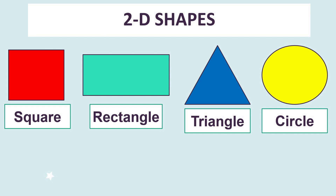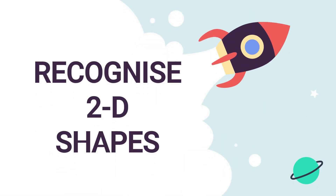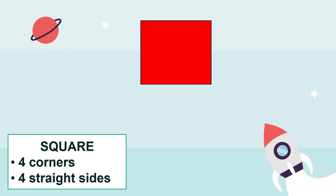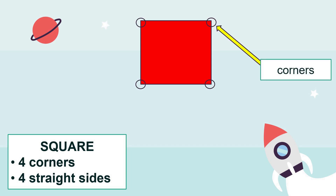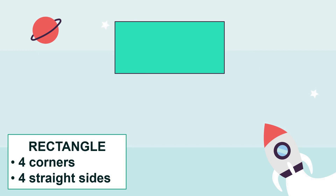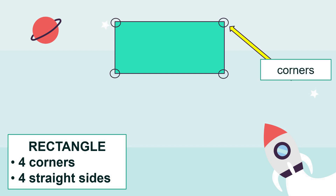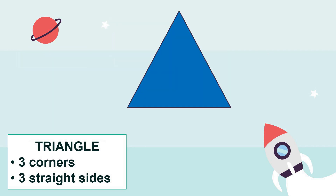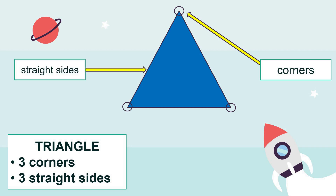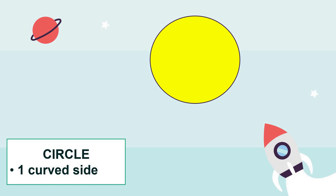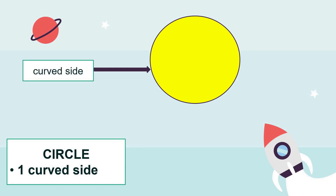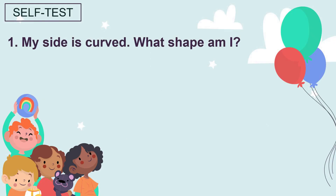Let's say it again: square, rectangle, triangle, and circle. Now let's recognize 2D shapes. This is a square — a square has four corners and four straight sides. This is a rectangle — a rectangle has four corners and four straight sides. This is a triangle — a triangle has three corners and three straight sides. This is a circle — a circle has no straight sides but it has one curved side.